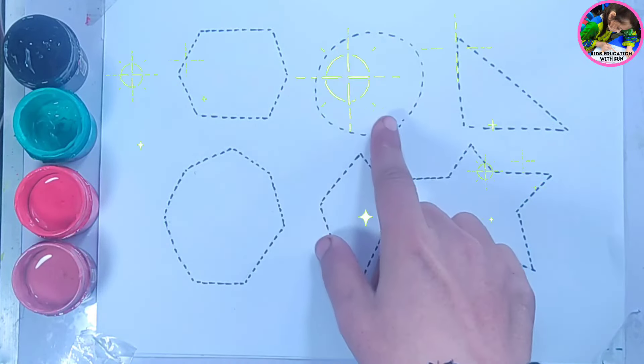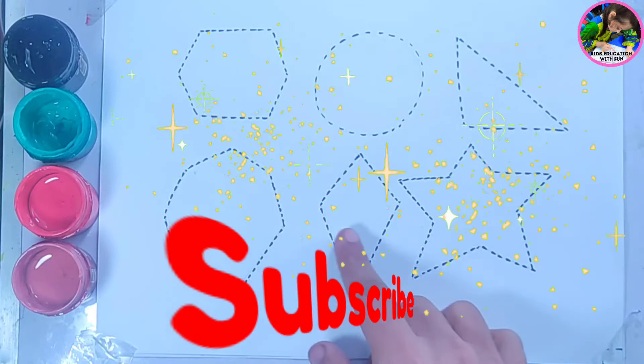This is hexagon, circle, right angle triangle, heptagon, diamond and star.